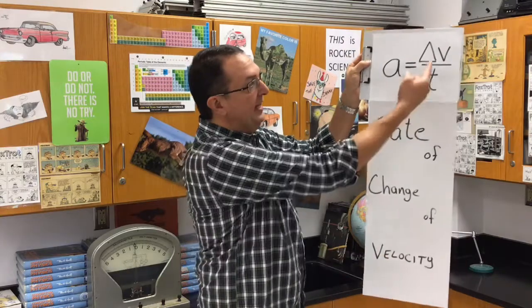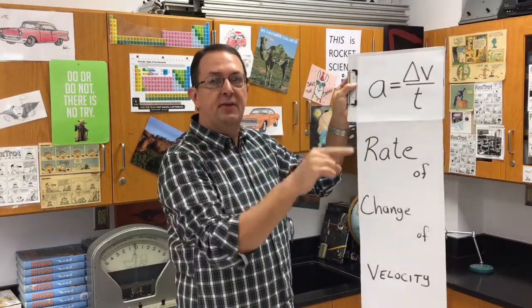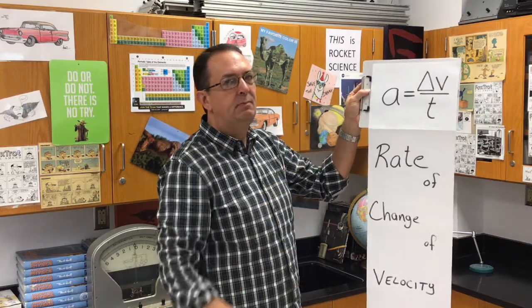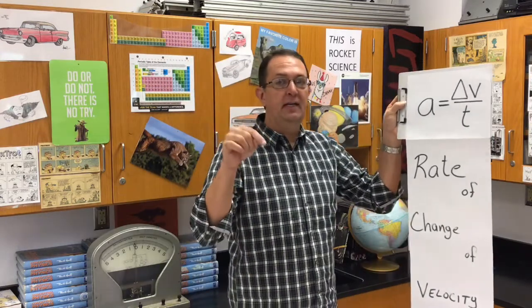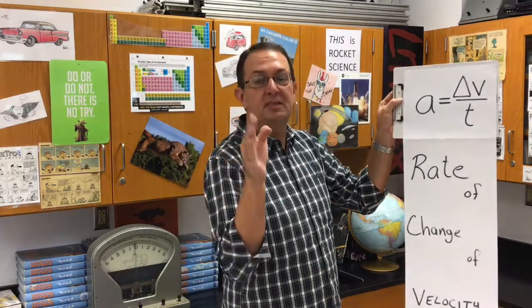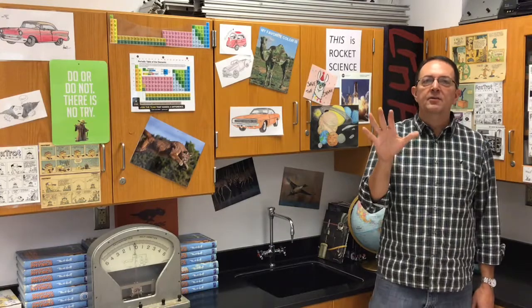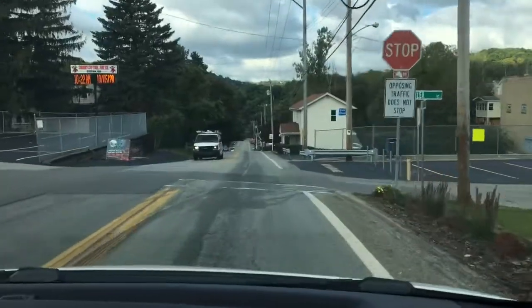Technically, velocity is a rate of change of position — the rate of displacement. But for the purposes of this video, we're just going to call velocity speed with direction to make it a little bit easier. Acceleration is the rate of change of velocity. And since velocity is speed with direction, you could change your speed or change your direction and be accelerating. So our definition of acceleration includes increasing speed, decreasing speed, and changing direction.